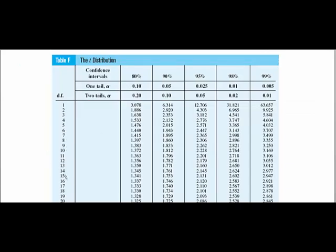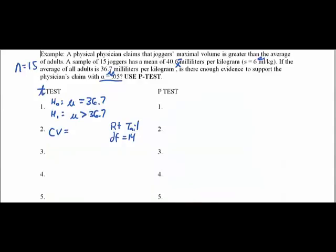Looking at the t-table: at 14 degrees of freedom with a one-tail test at 5%, I find the critical value. Sliding down from the 0.05 column and over from the 14 degrees of freedom row, we get 1.761 as our critical value. So as long as our test value is over 1.761, we're going to reject the null hypothesis.